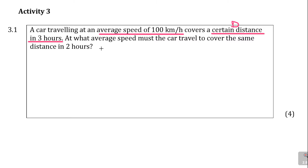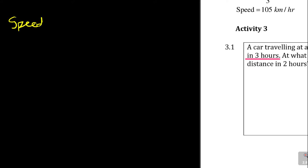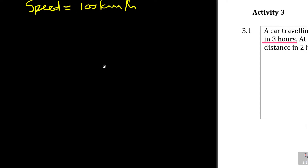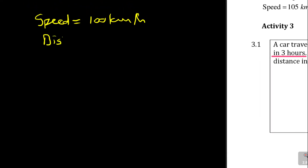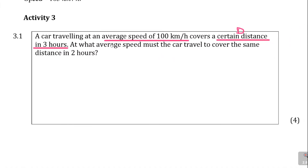We take down the information: speed is 100 kilometers per hour, distance is unknown (we'll call it d), and time is equal to three hours. The units are correct — time is in hours and speed is in kilometers per hour. The question then asks: at what average speed must the car travel to cover the same distance in two hours?